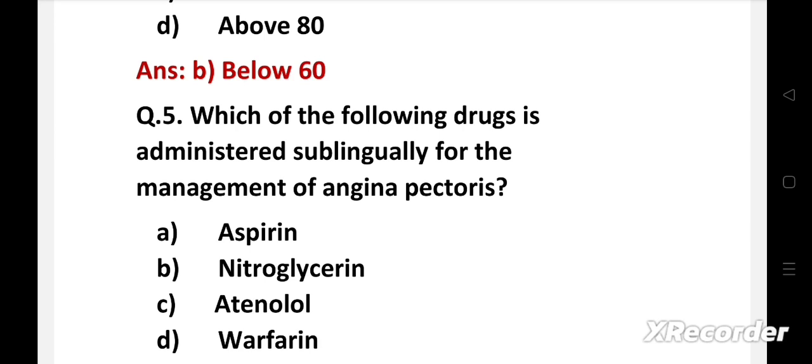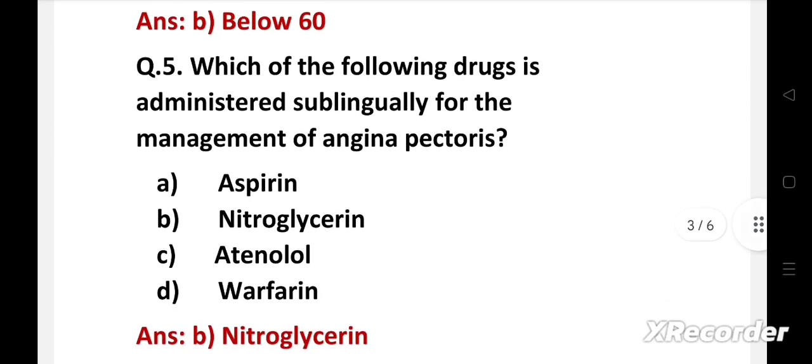Next question: which of the following drugs is administered sublingually for the management of angina pectoris? Option A: aspirin, B: nitroglycerin, C: atenolol, D: warfarin. Right answer is option B, nitroglycerin. Sublingual administration bypasses the first-pass metabolism of the drug in the liver. Sublingual nitroglycerin is rapidly absorbed into circulation through blood vessels in sublingual mucosa and it is useful for the management of angina pectoris.